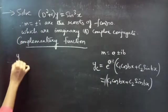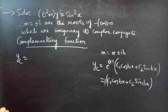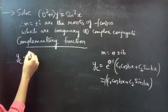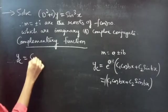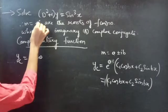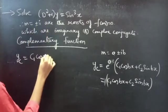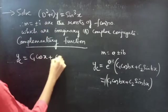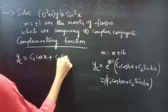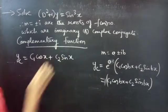Now our complementary function: when we have complex conjugate roots, the complementary function is e^(ax) · (c₁ cos bx + c₂ sin bx). Since the real part is 0, e^(0·x) = 1, so the complementary function is yc = c₁ cos x + c₂ sin x, for b = 1.